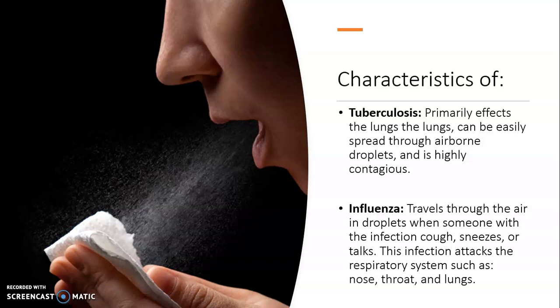Tuberculosis is a disease that primarily affects the lungs. It can be spread through airborne transmission, so you can catch it on an airplane, in a classroom, in a hallway — anywhere that someone has this, you have a possibility of catching it. Tuberculosis is highly contagious. A lot of people don't know much about tuberculosis or think that it's not that big of a disease, but it really is, because it's in the air and you can get it.